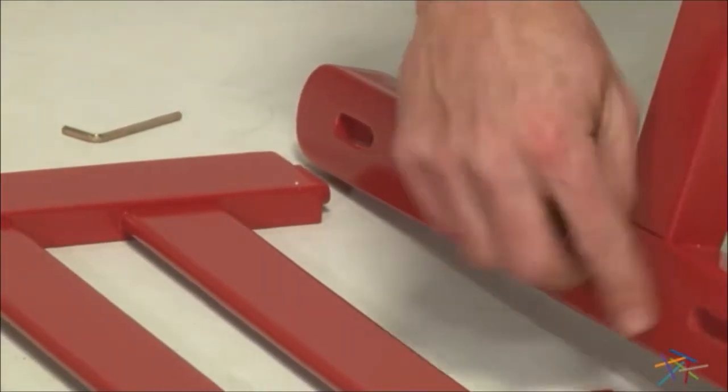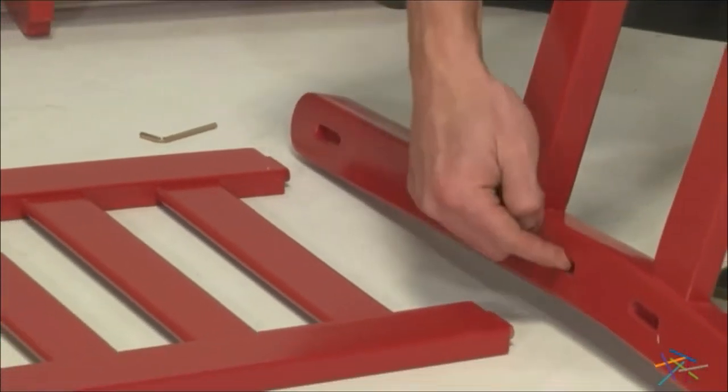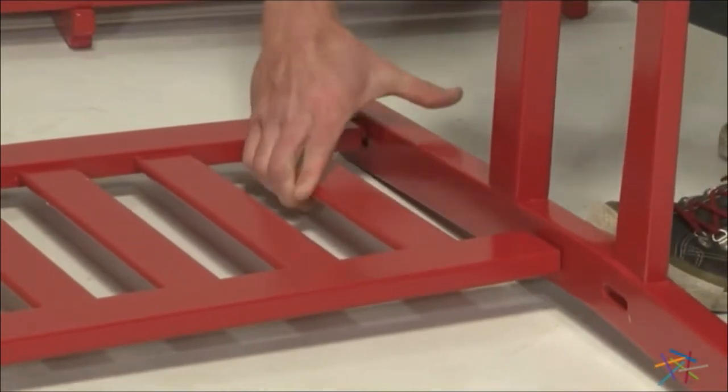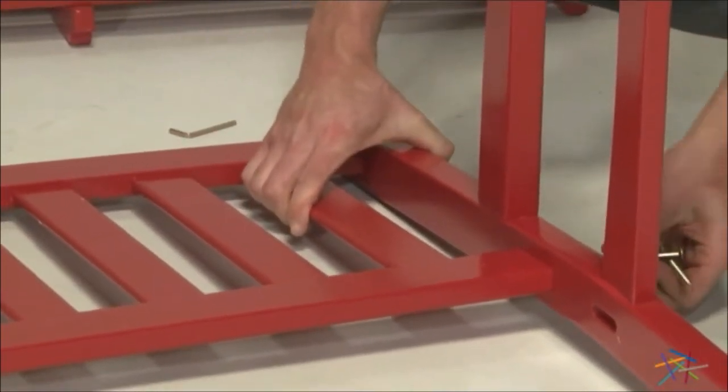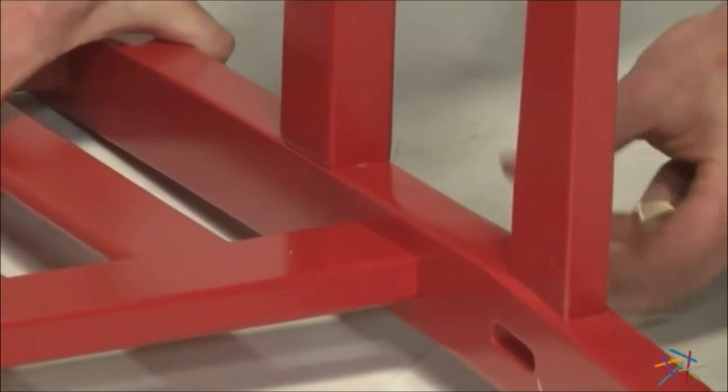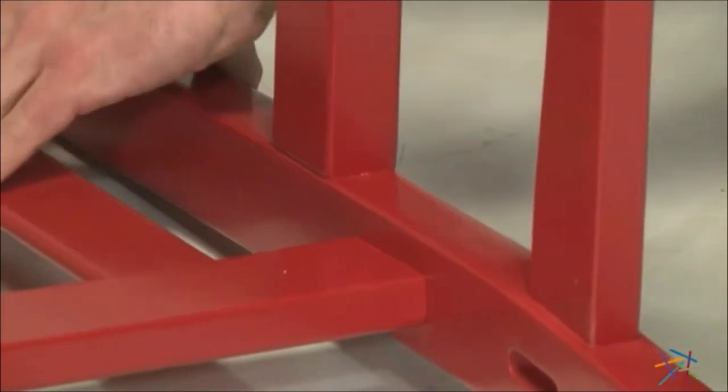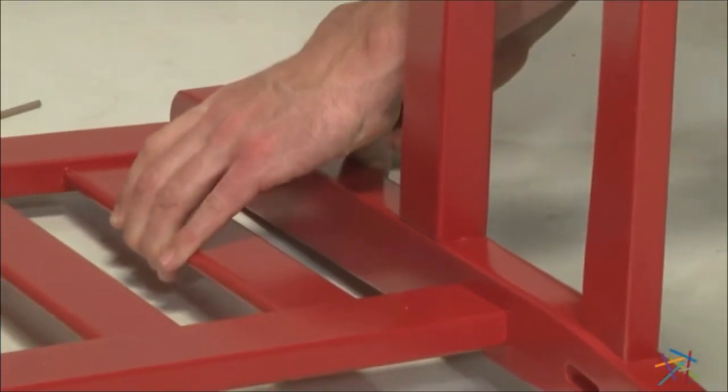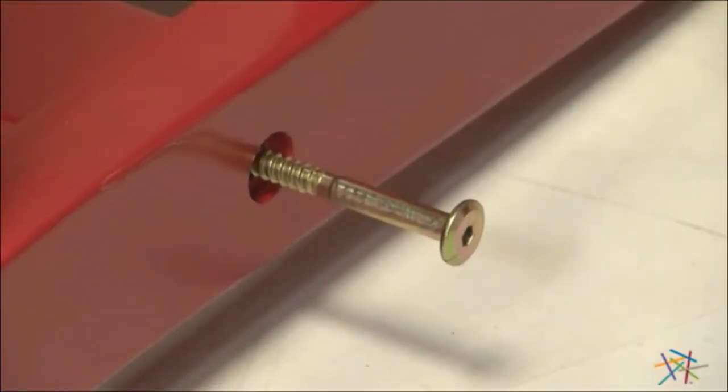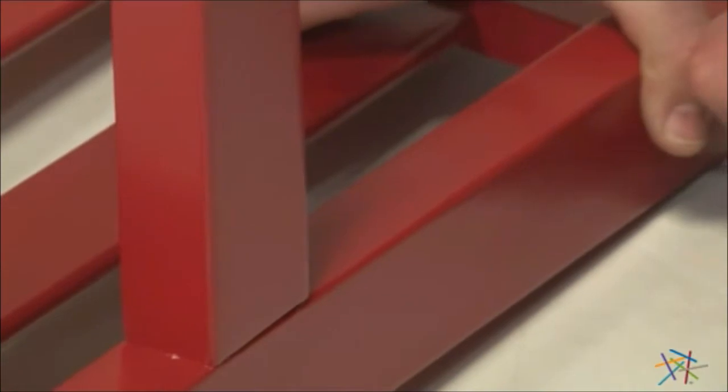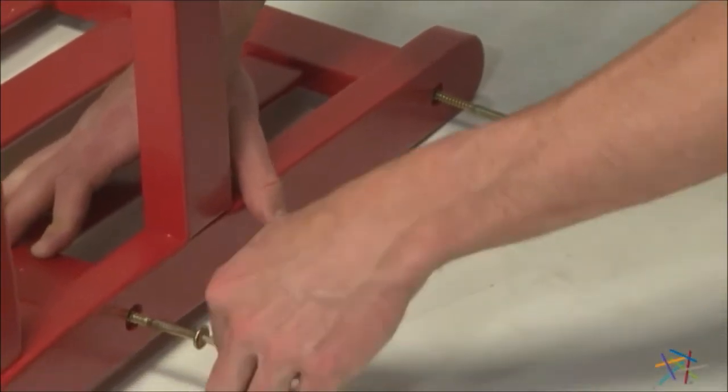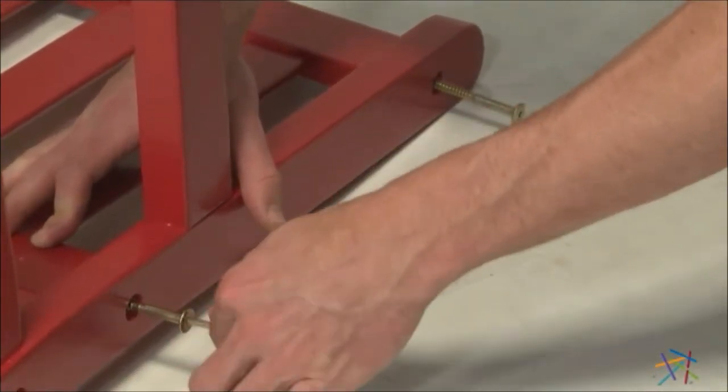Start by taking part B, making sure to line up the slots with the inserts on part D. Being careful to line those up, insert. Take your number 1 screw and hand tighten. Once you've hand secured, finish with your number 2 Allen key.